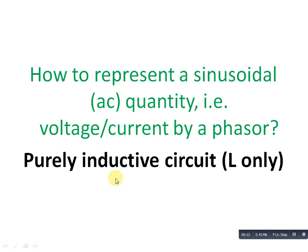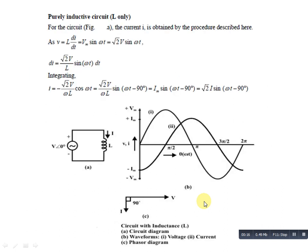So let us consider a purely inductive circuit, L only. This is our circuit diagram. In this circuit, the voltage source (battery) is directly connected to inductance L, and the current flowing through this inductance is capital I. The relationship between voltage, current and inductance is V = L·di/dt.